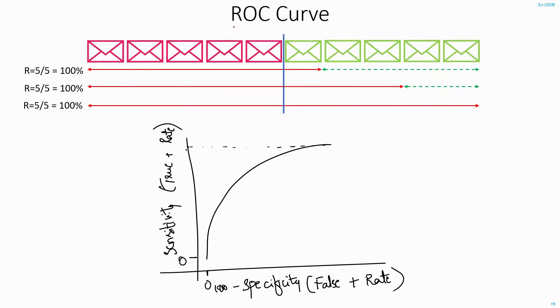This is a curve called receiver operating characteristic curve, wherein you plot the true positive rate against the false positive rate, or in other words, you plot the sensitivity against 100 minus specificity. This is the kind of curve that you get.